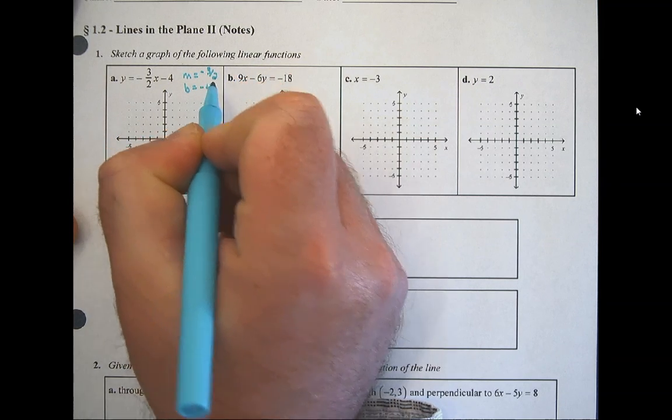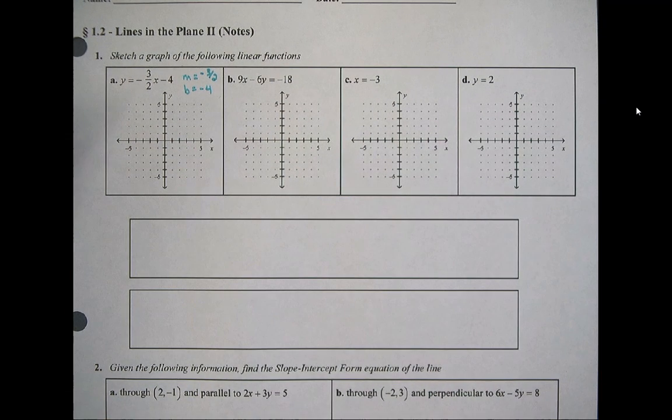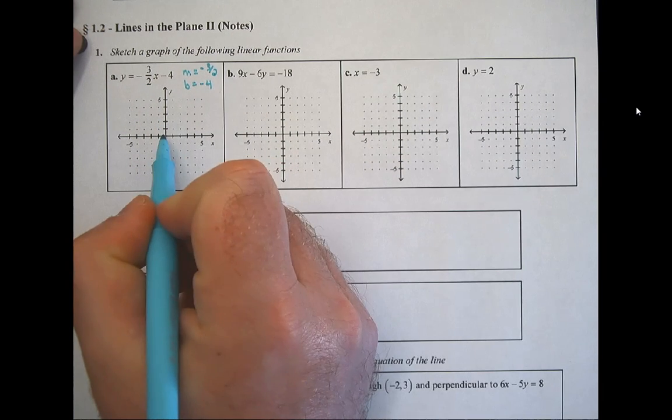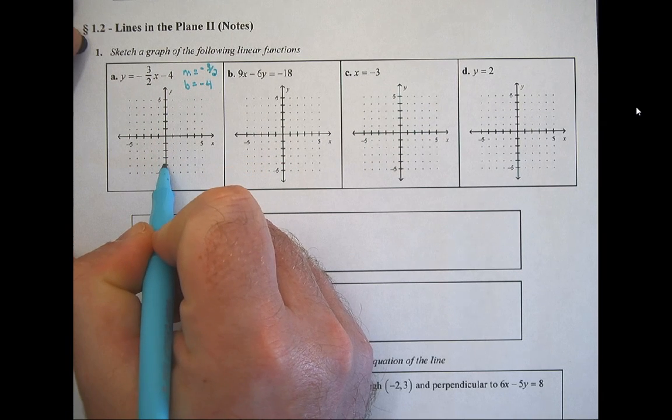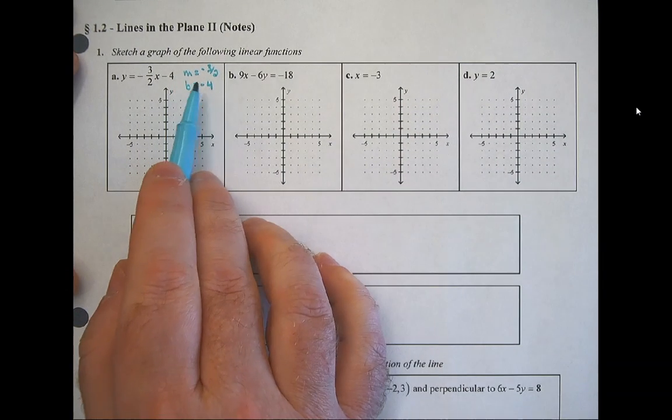Then the other number is our b value, which is known as the y-intercept. I think about it as b as in beginning, because that's where you want to begin your graph. So I'm going to begin my graph down here at negative 4. And then if you remember, our saying for slope is rise over run.